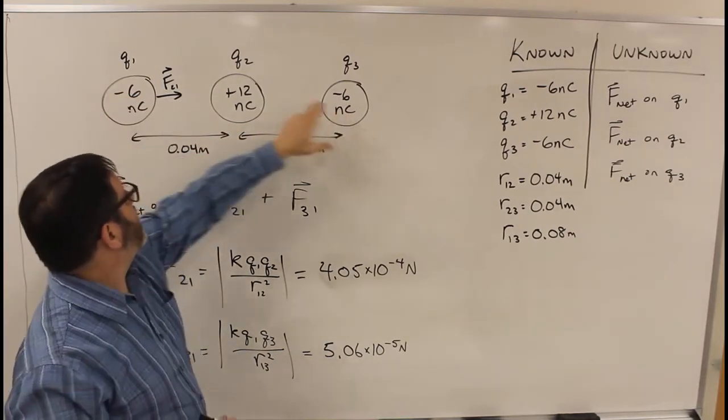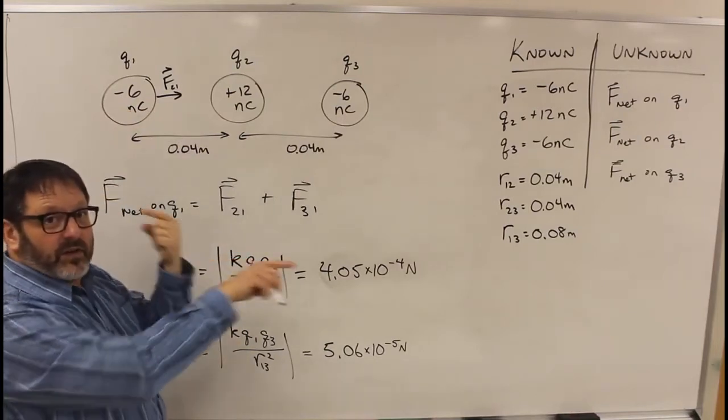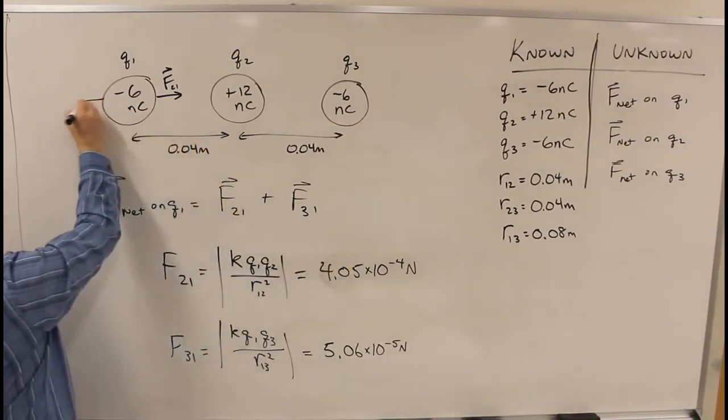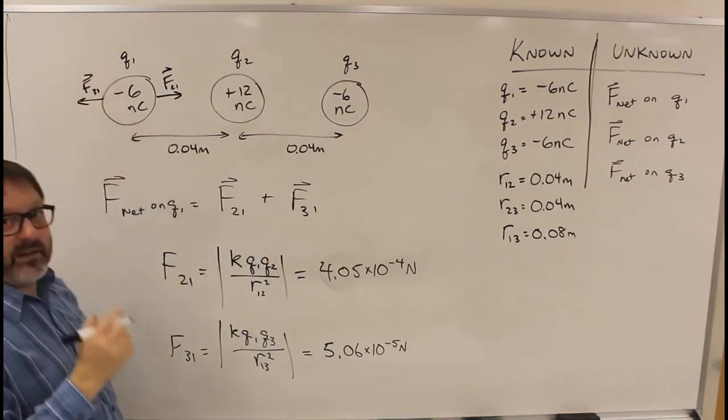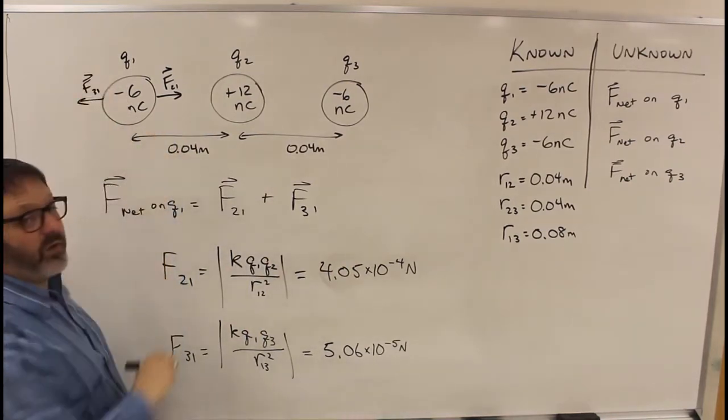What about this one? This is a negative, that's negative. They're going to repel. So F3,1 is to the left. F2,1 is to the right.